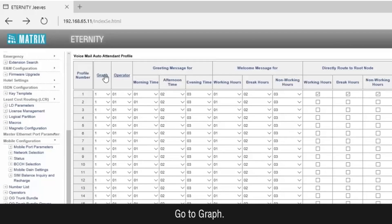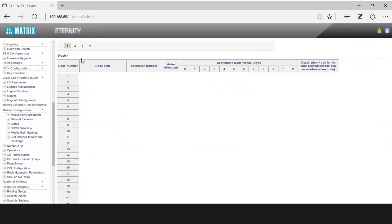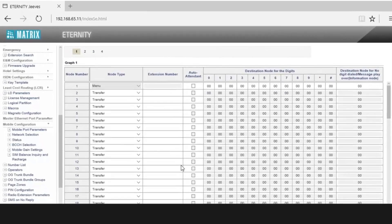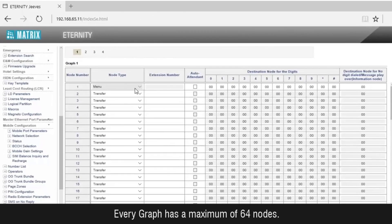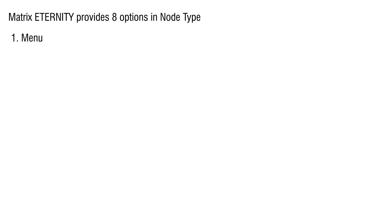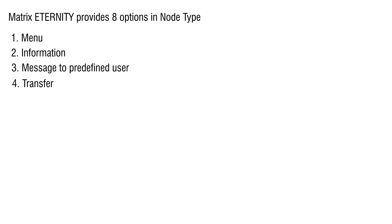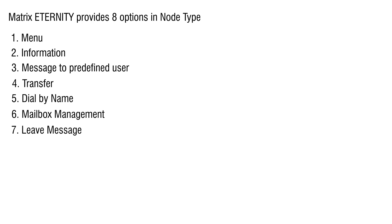Go to graph. Every graph has a maximum of 64 nodes. Matrix Eternity provides 8 options in node type: menu, information, message to predefined user, transfer, dial by name, mailbox management, leave message, and disconnect.